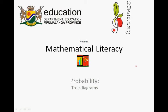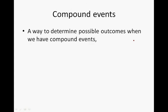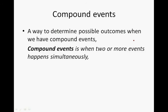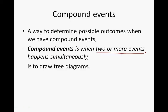Enable.org presents mathematical literacy: probability, tree diagrams, and compound events. A tree diagram is a way to determine possible outcomes when we have compound events. Compound events occur when two or more events happen simultaneously — when two things happen at the same time or one after the other, but we consider them simultaneously. A way to determine possible outcomes when we have compound events is to draw tree diagrams.